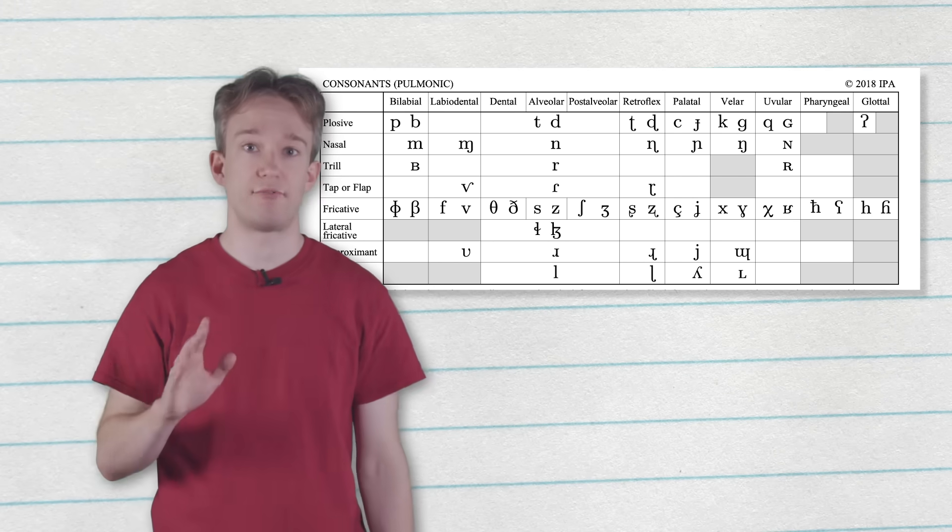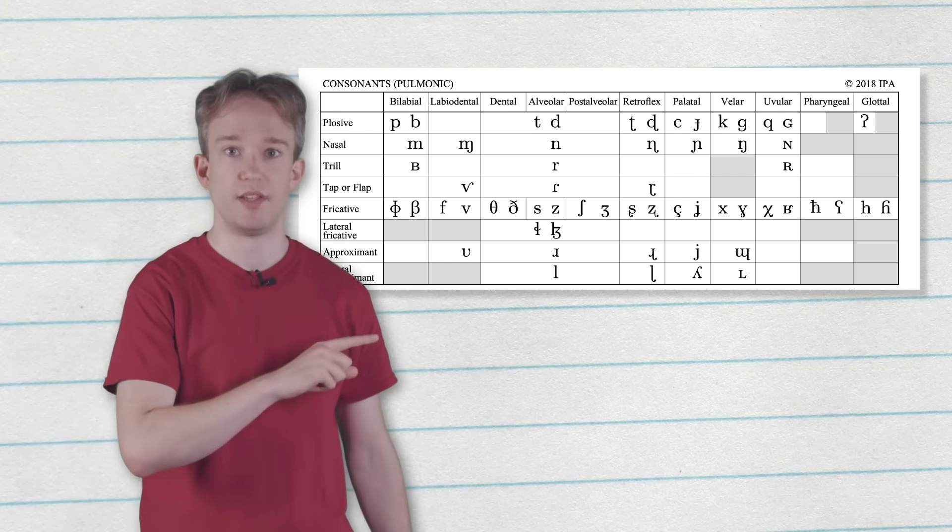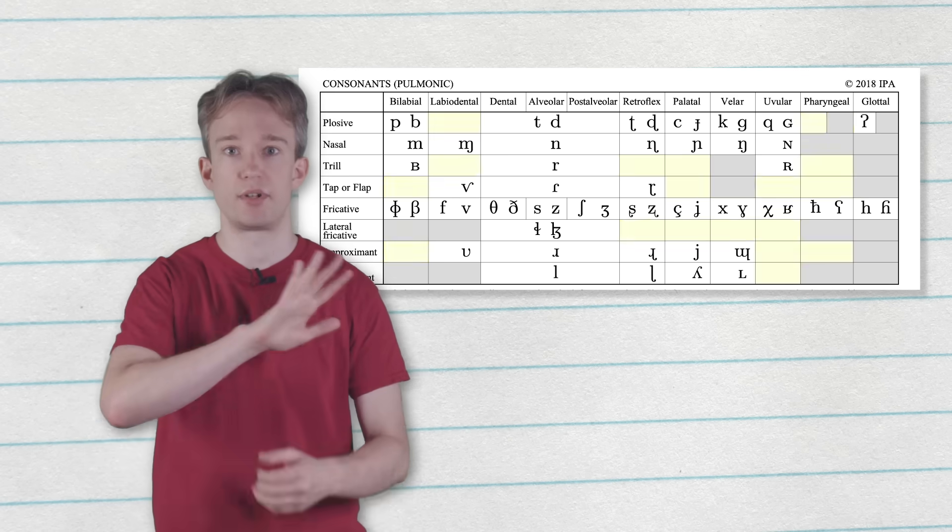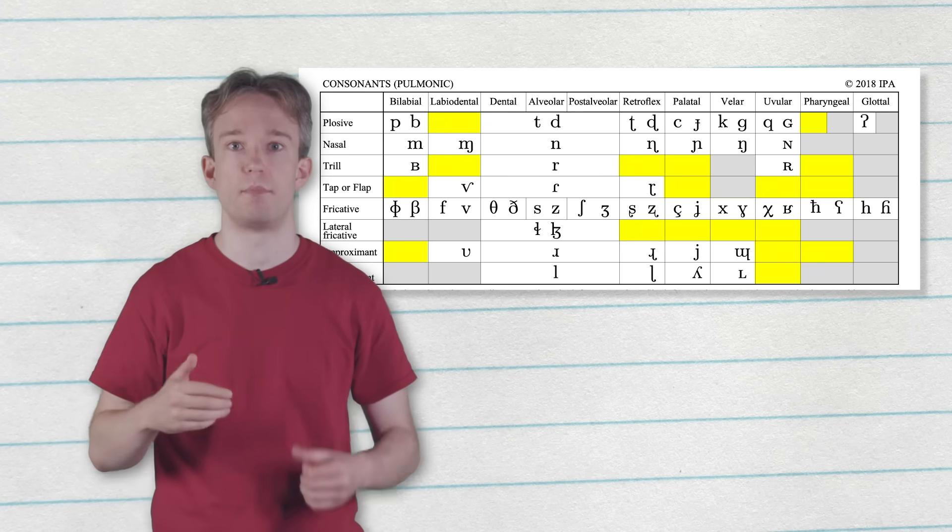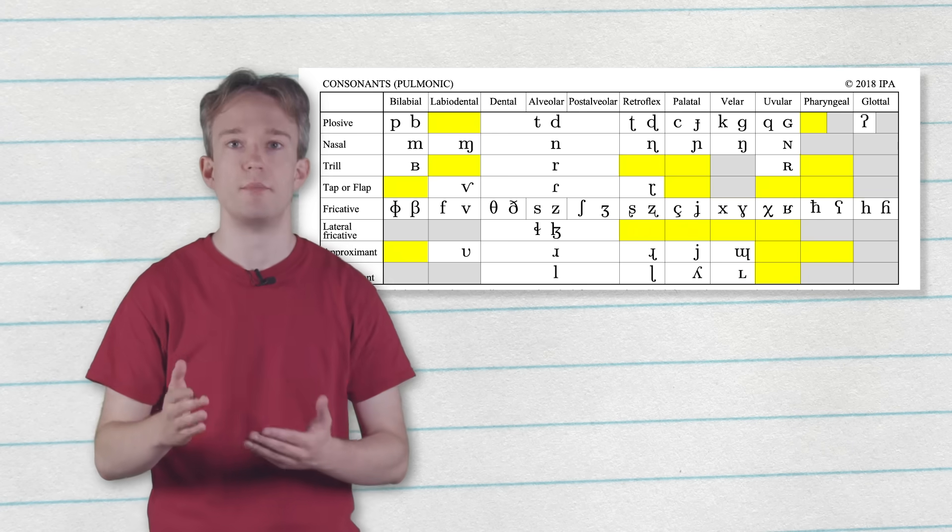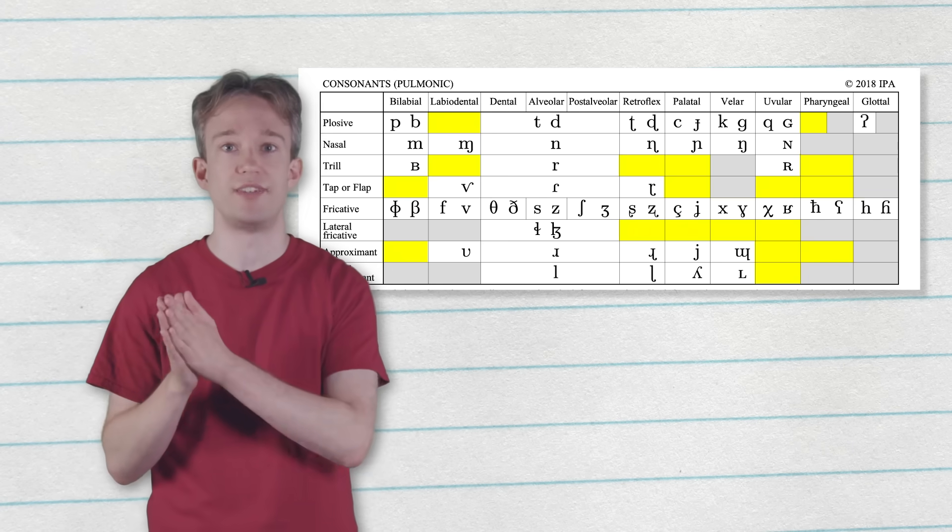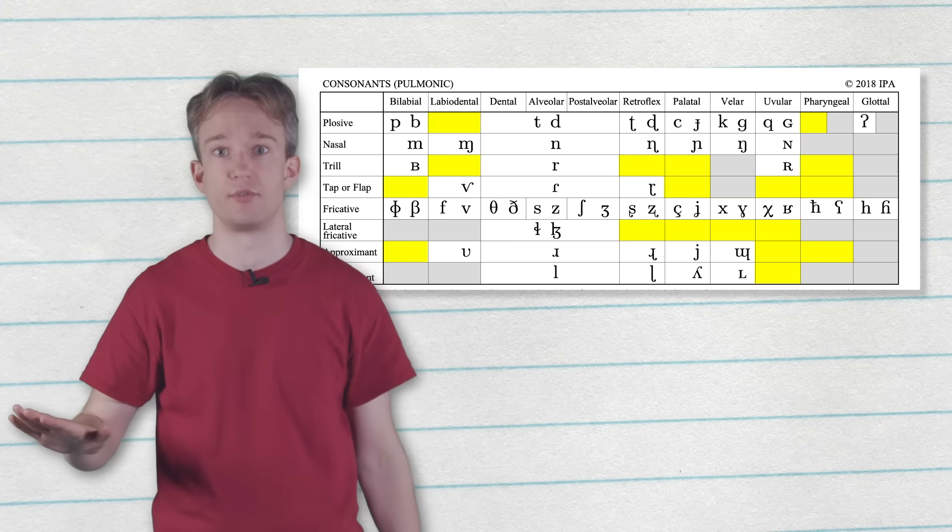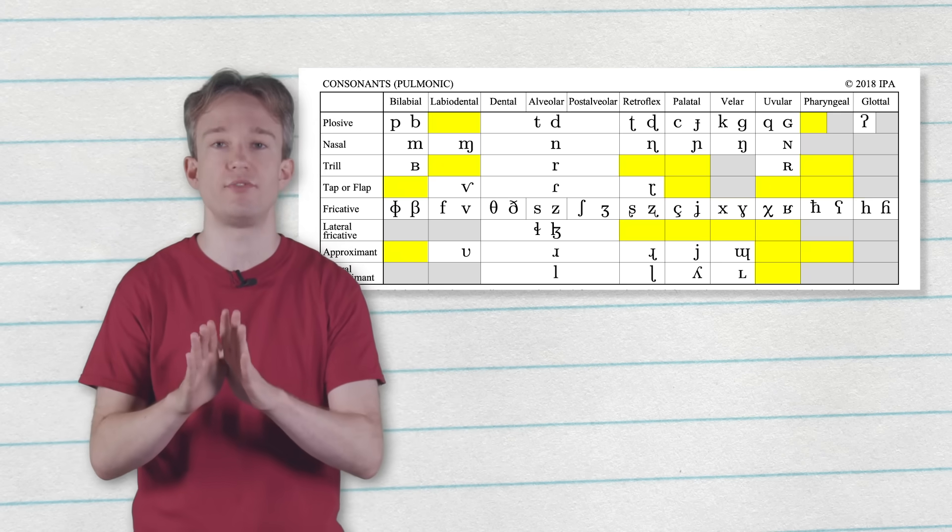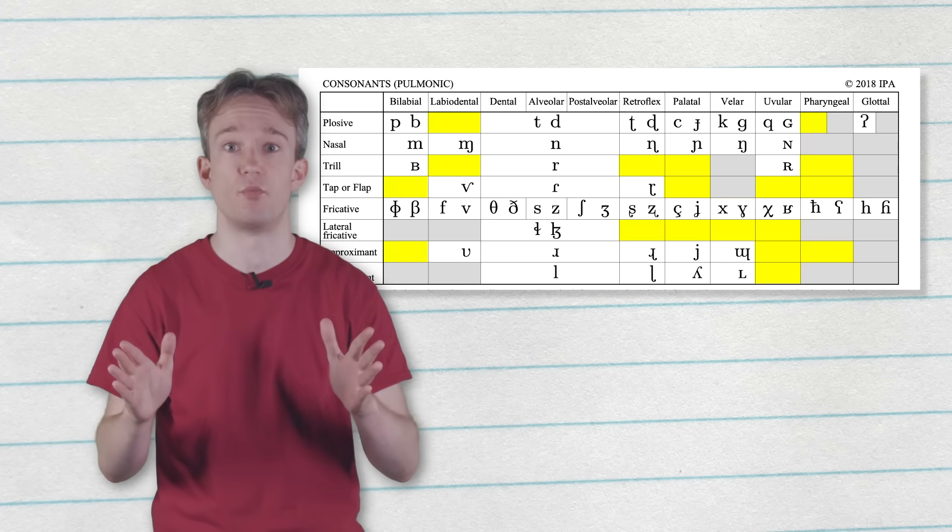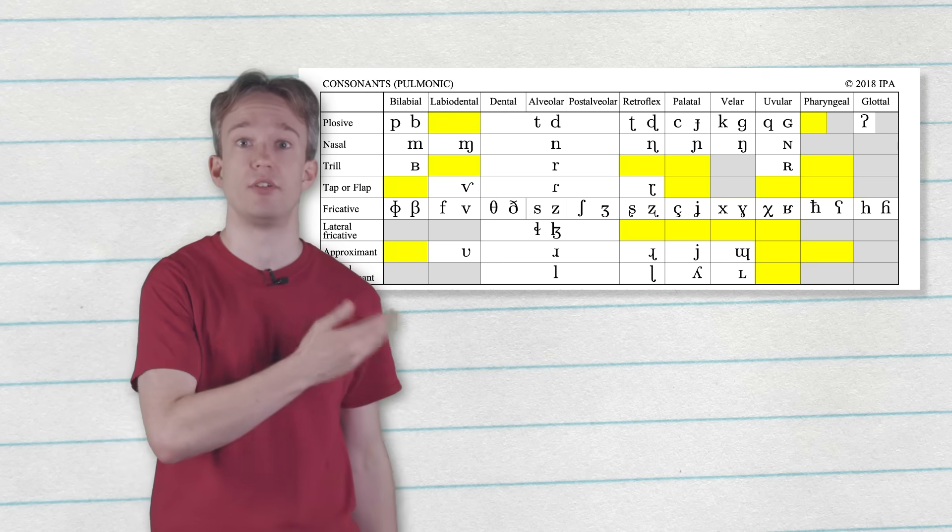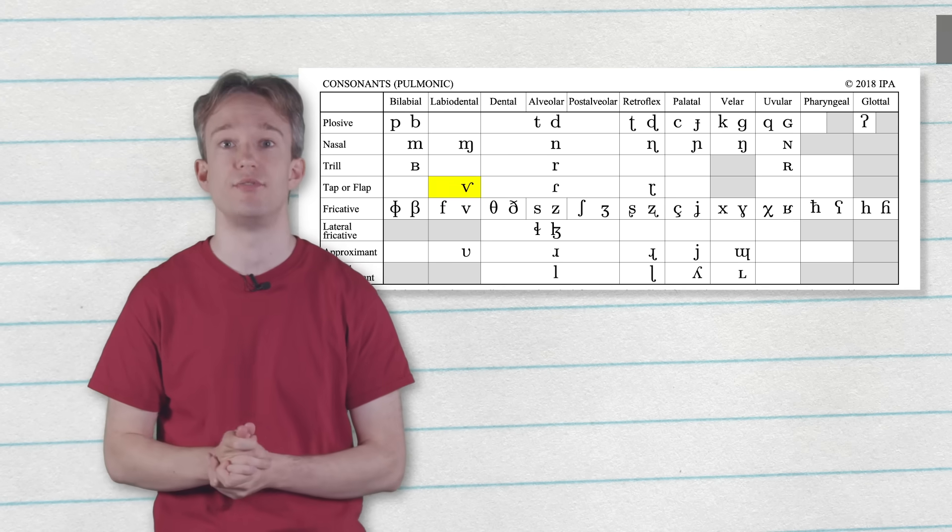But not every space in the table has a symbol. Some of those empty spaces have white backgrounds, and some of them are completely greyed out. The ones with white backgrounds are possible for humans to make, but they've not been given a symbol because linguists have never found them actually being used as sounds in any of the world's languages. Sometimes, they are found to exist by some researcher somewhere, and if that happens, then the International Phonetics Association will add a symbol. The last time that happened was in 2005.